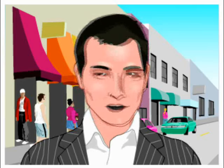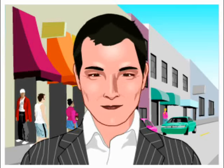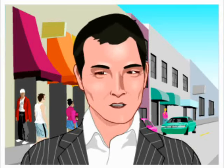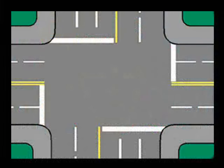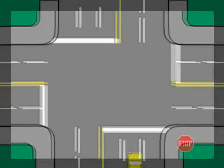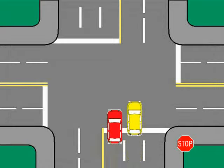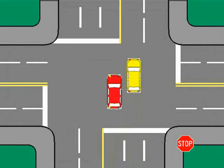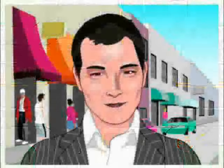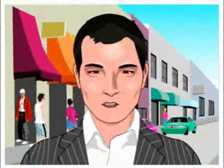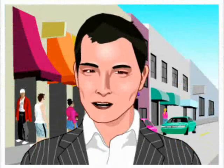Six of nine. Left turns from a two-way street to another two-way street — double left turns. Where signs or lights indicate that two lanes of traffic may turn left, you must move into one of the lanes. Proceed through the intersection and complete the turn in the same lane.